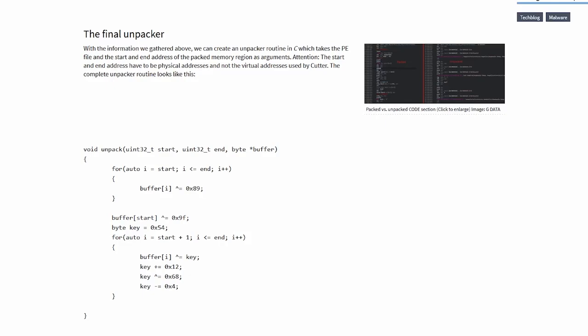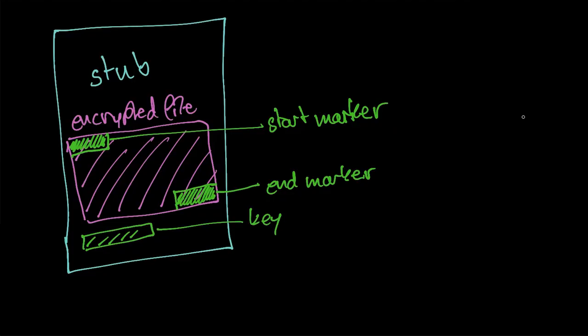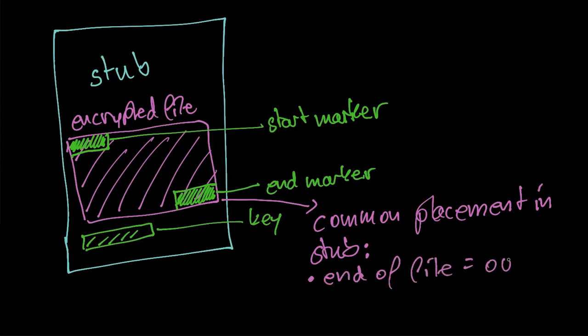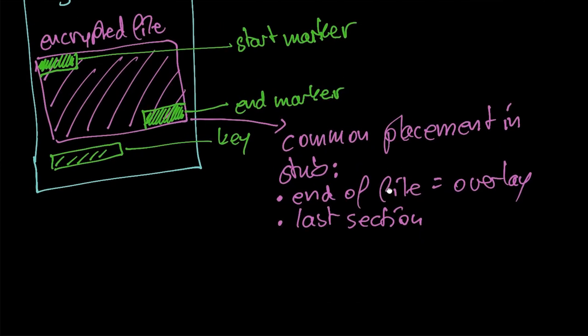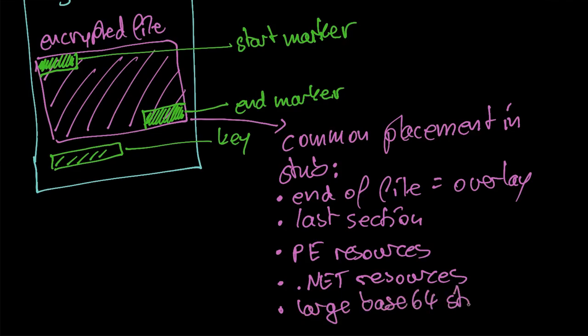But not all packed files work like that. Oftentimes the encrypted part is placed in well-known structures of the file. For instance, it could be placed at a fixed offset or directly at the end of the file. Another common location is the last section of the file. Why the last? Because the size of it can be easily expanded without affecting other sections that follow after it. The PE resources are also a common location as well as the .NET resources. What I also see often is a huge base64 string that contains the encrypted data.